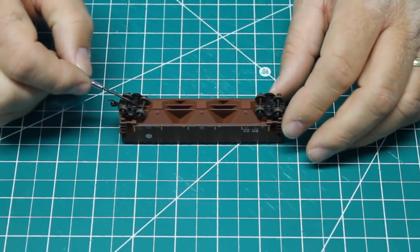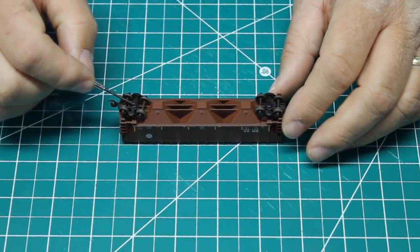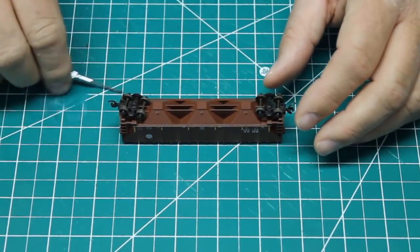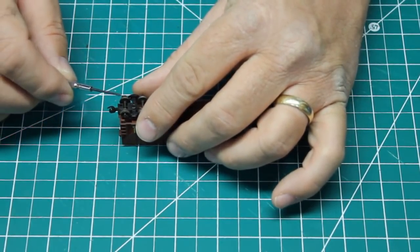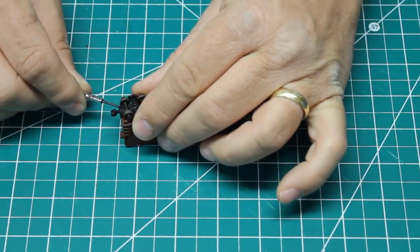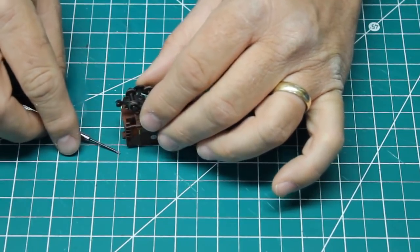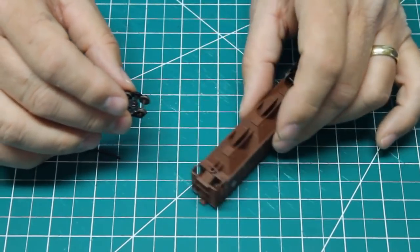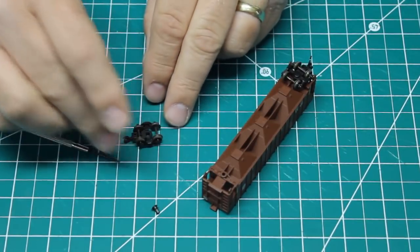In this case, this is an Atlas car and Atlas trucks are pin mounted, which means it just has a friction pin that fits into the hole in the bolster. So the easiest way to remove those is just to get a small flat screwdriver and I'm going to slide it under the truck up between the truck and the bolster and just pry up very gently. And you see it pries the truck right off. There is my bolster pin. I'm going to hold on to that.